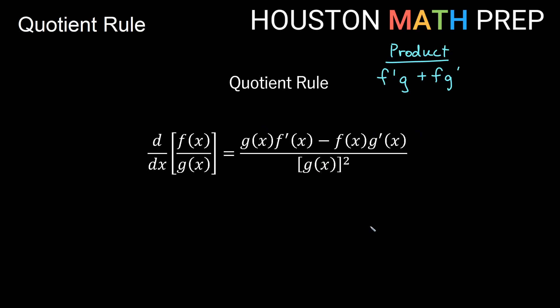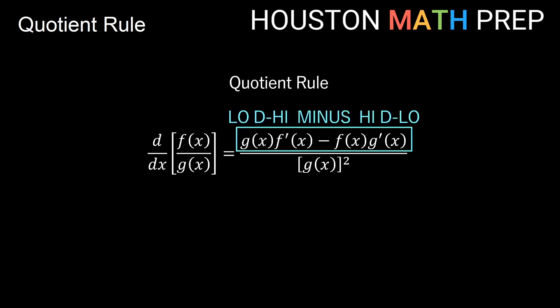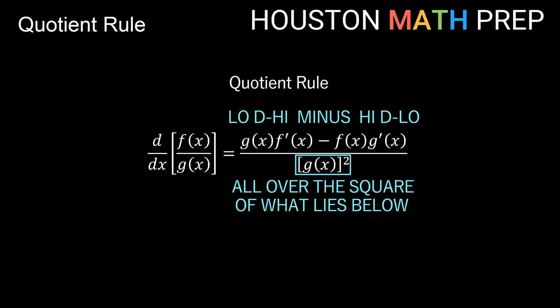We like to use a little rhyme as you travel about. So we have g f prime minus f g prime — we're going to think of this as "low d high minus high d low." If this is the low function and this is the high function, then we have the low function times the derivative of the high function, minus the high function times the derivative of the low function. So low d high minus high d low, and the bottom we say all over the square of what lies below. It's a nice little rhyme.